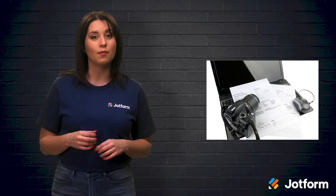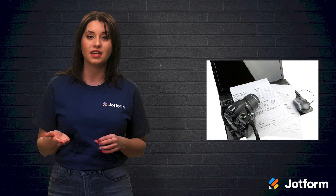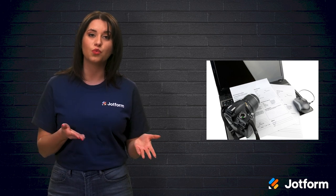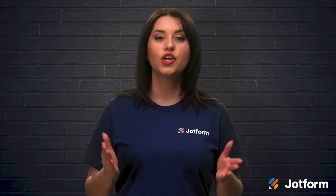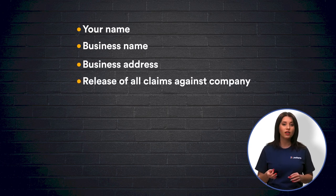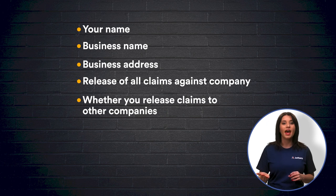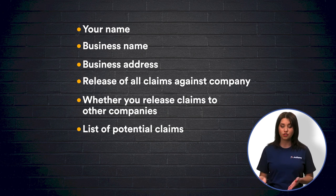Never mislead people to get a model release form signed. If a model or client challenges the use of your photo, your form may be invalidated because facts about how the photos would be used were either hidden or misrepresented. To avoid making any mistakes, follow this rundown of model release form necessities. You'll want to include your name and business name, your business address, a release of all claims against your company, whether you want to release claims from other companies that buy, use, or obtain the license for your photos, and a list of potential claims covered by the model release form. This could include copyright infringement, defamation, invasion of privacy, and rights of publicity.